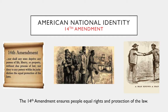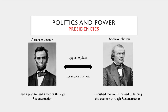Regarding politics and power: the role of power in the United States changed during the Reconstruction. The country's new president, Andrew Johnson, had different beliefs and plans than Lincoln. Abraham Lincoln had designed a plan to lead America through the Reconstruction, but once he was murdered, those plans fell through. The plan quickly became focused on punishing the South, which drastically lengthened the process of reunifying the nation.